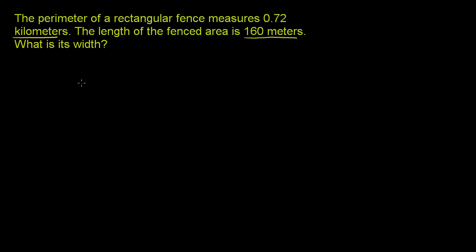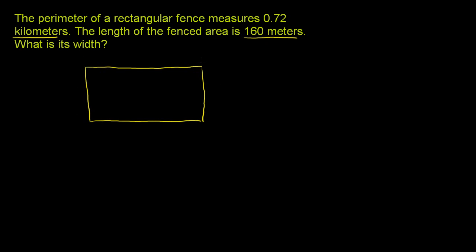So we have a rectangular fence. Let me draw it — that is a rectangle. You can imagine we're looking from above. This line is the top of the fence. The perimeter is the distance around the fence: this distance plus this distance plus that distance plus that distance is going to be 0.72 kilometers. That's the total distance of all of the sides. Now the length of the fenced area is 160 meters, so this distance right here is 160 meters. Since it's a rectangle, that distance over there is also going to be 160 meters.